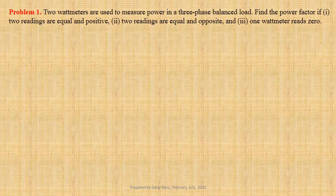Two wattmeters are used to measure power in a three-phase balanced load. We have to determine the power factor if the two readings are equal and positive, if the two readings are equal and opposite, and if one wattmeter reads zero.